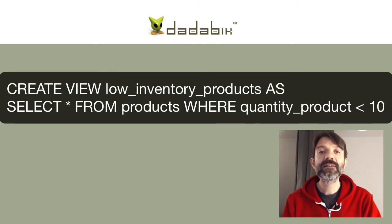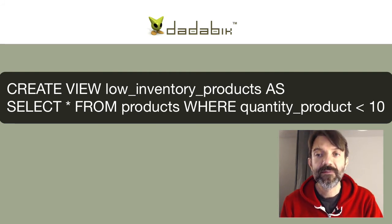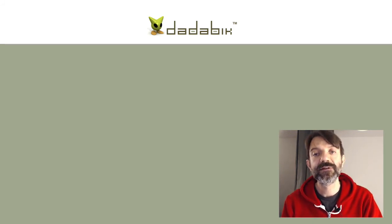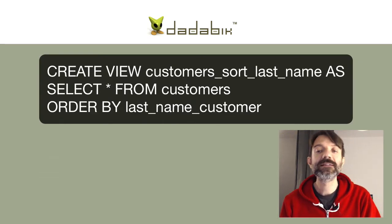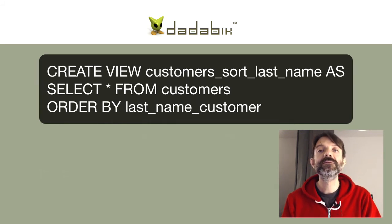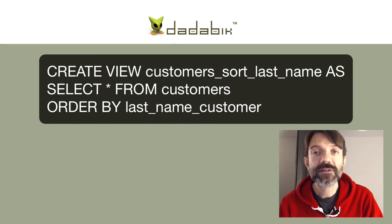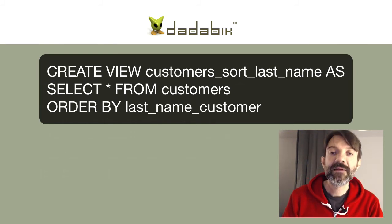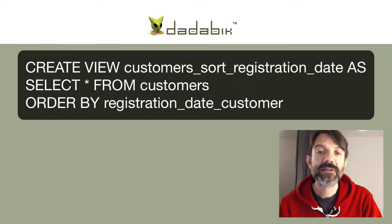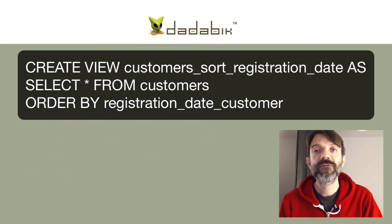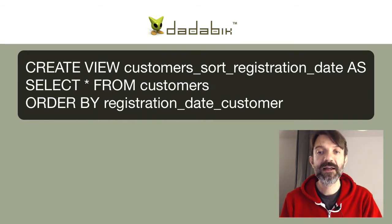Sometimes you don't need to filter the table, you just need to sort records. For example, I can create two additional versions of customers: one sorted by last name, the other sorted by registration date. Here are the two SQL CREATE VIEW statements to use — first with ORDER BY last_name_customer, and second with ORDER BY registration_date_customer. Note there's no WHERE clause since we want all records from the customers table.